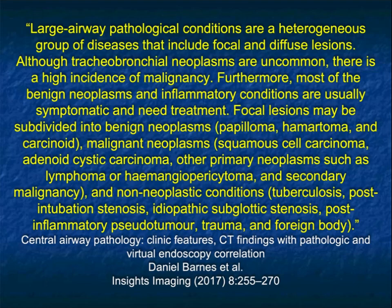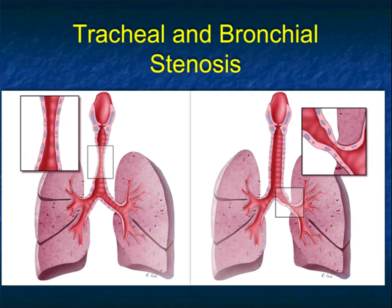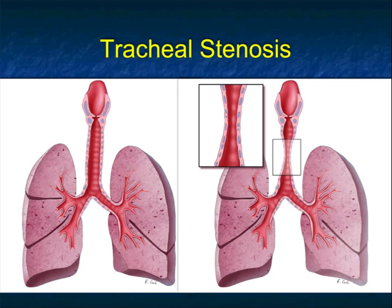Large airway disease is a heterogeneous group of diseases — from focal to diffuse, from benign to malignant, from inflammatory. I didn't show you examples like tuberculosis, sarcoidosis, or an impacted foreign body, but you can see there's a large differential diagnosis. Think about it in a logical fashion: where is the location? Is it focal or diffuse? Is it trachea or bronchi? How extensive is the process and how severe is the stenosis? When you take all of those things into consideration, you're going to do a great job with your differential diagnosis.